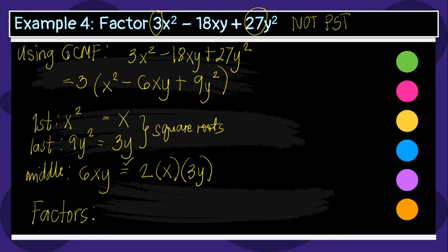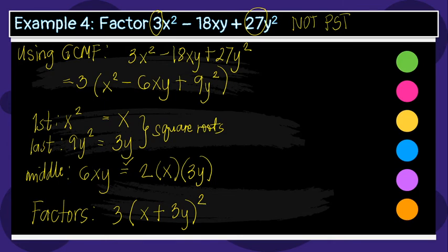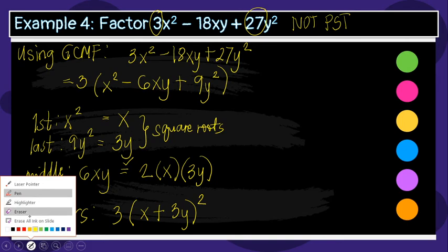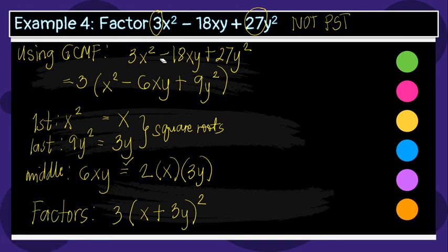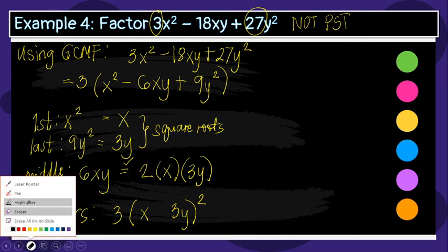The factors of 3x squared minus 18xy plus 27y squared is 3 times the quantity of x squared minus 6xy plus 9y squared, which factors as 3 times the quantity of x minus 3y, squared. We use a negative sign because the middle term is negative.